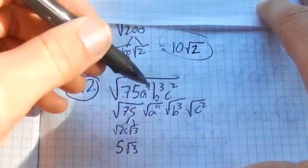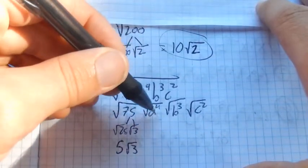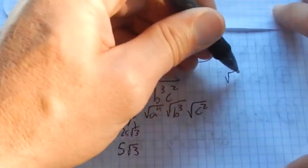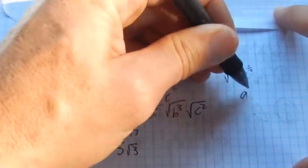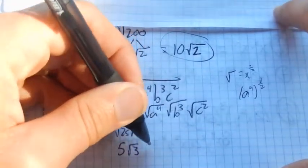8 to the 4th. A couple ways to think about that. Like what squared would give me something to the 4th power? The other way to think about that is, remember square root is the 1 half power. So I could think of this as a to the 4th to the 1 half. Either way, this gives me an a squared.